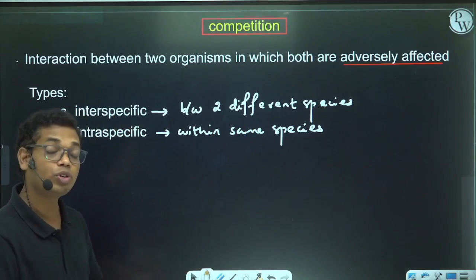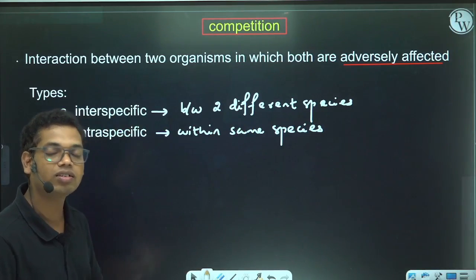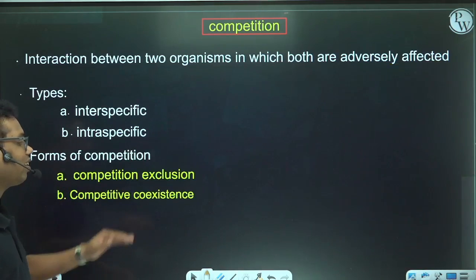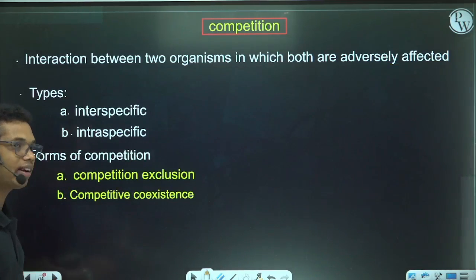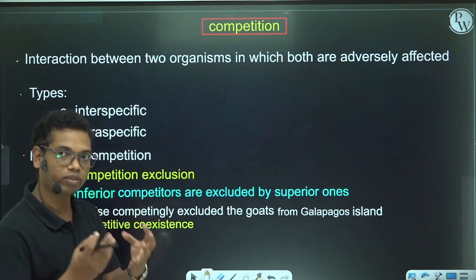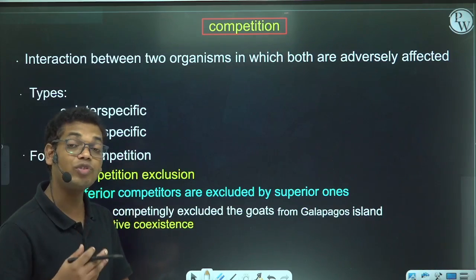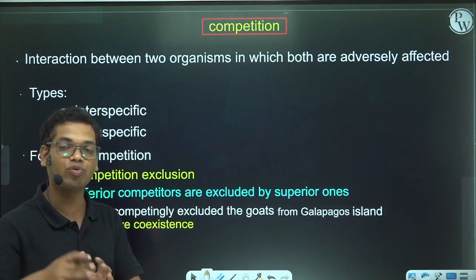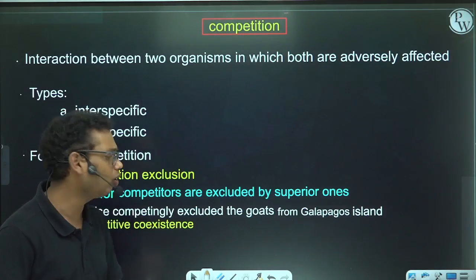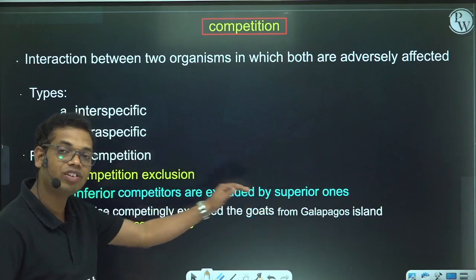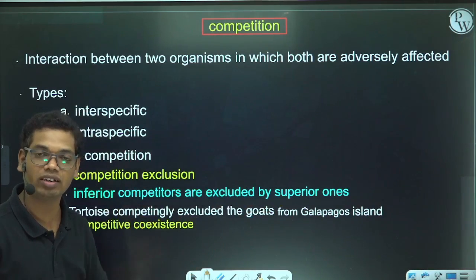This competition between two organisms can occur in two different forms. One is competitive exclusion, and the second is competitive coexistence. In competitive exclusion, the superior competitor — which utilizes resources in a better way — will exclude the inferior one from the area. In the presence of the superior competitor, the inferior one will be completely eliminated from the area.